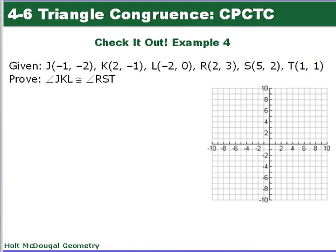Now it's your turn. Plot the two triangles, prove them congruent using the distance formula for all three sides, and then once the triangles are shown congruent, use CPCTC to prove the corresponding angles are congruent.